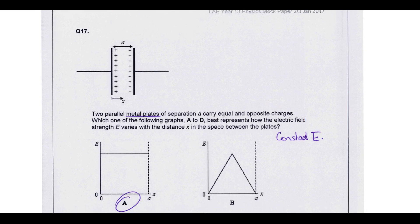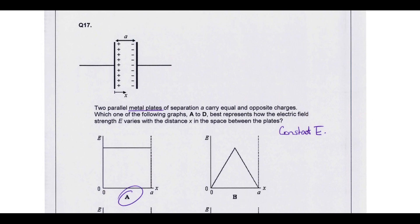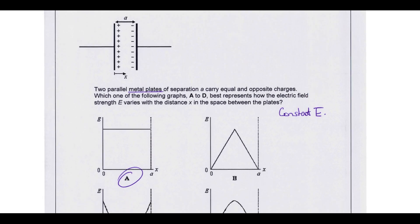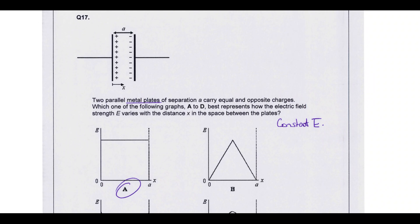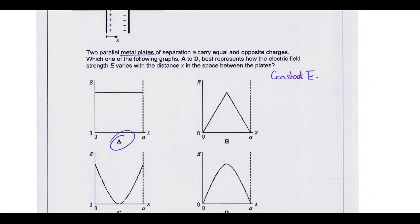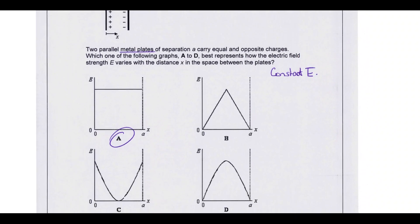Moving on to the next question. We've got two parallel metal plates that have equal and opposite charges. Which one of the following graphs best represents how the electric field strength varies with distance? So this is clearly a uniform electric field where the field strength is constant throughout. So that is going to be option A.